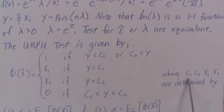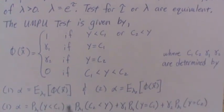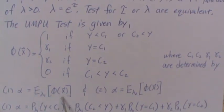Now the values C1, C2, gamma 1, gamma 2 are determined by these two equations. Alpha is equal to the expected value of the test function with the assumption that lambda 1 is the true parameter, and the second equation is that alpha is equal to the expected value of the test function under the assumption that the true Poisson parameter is lambda 2.